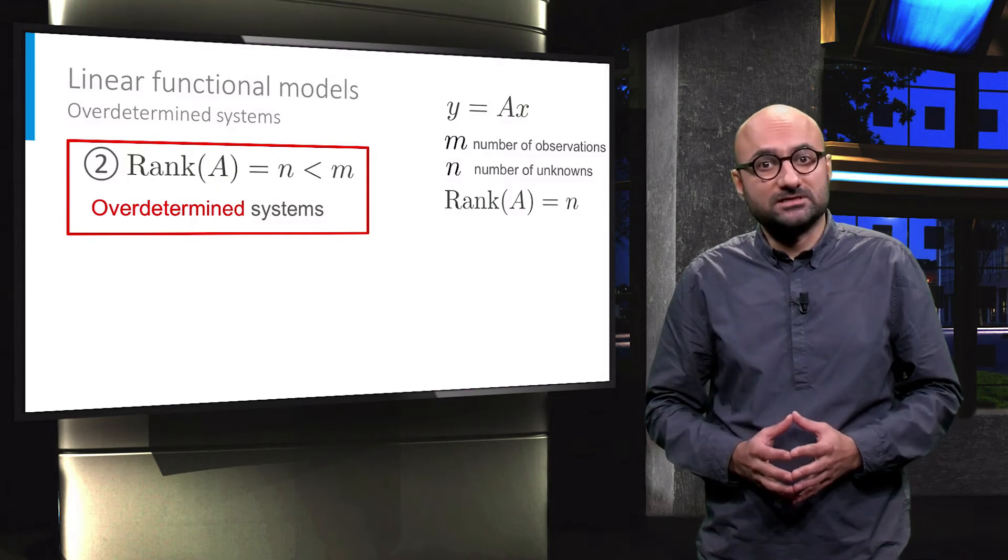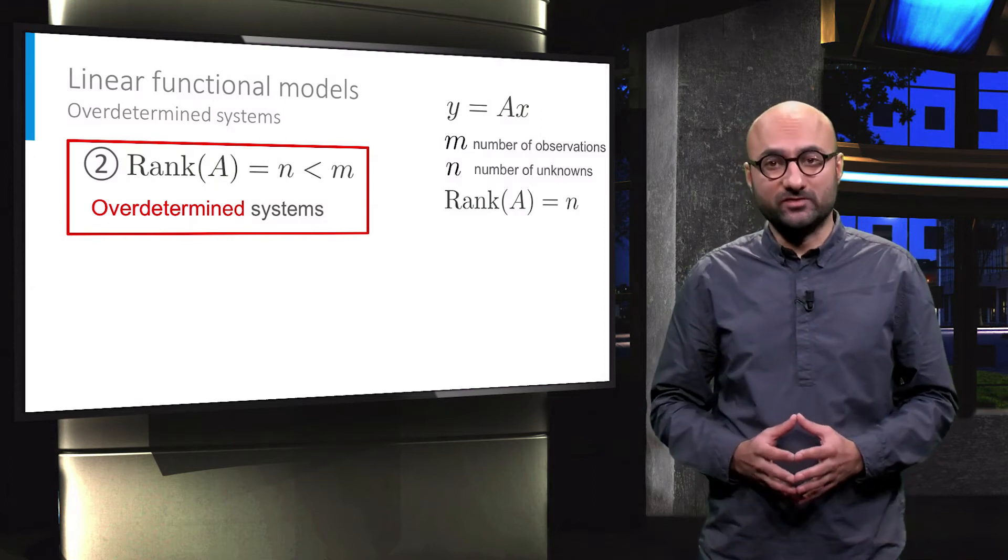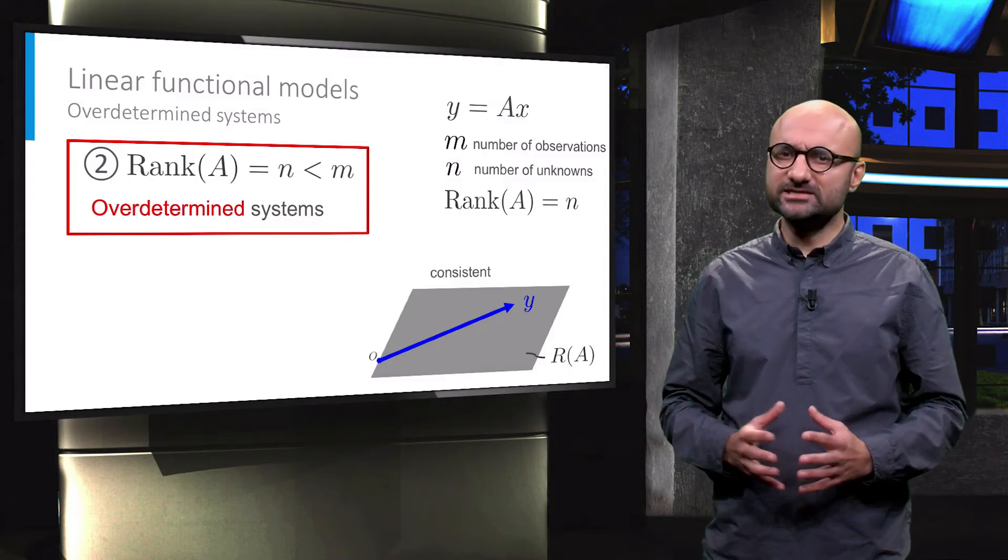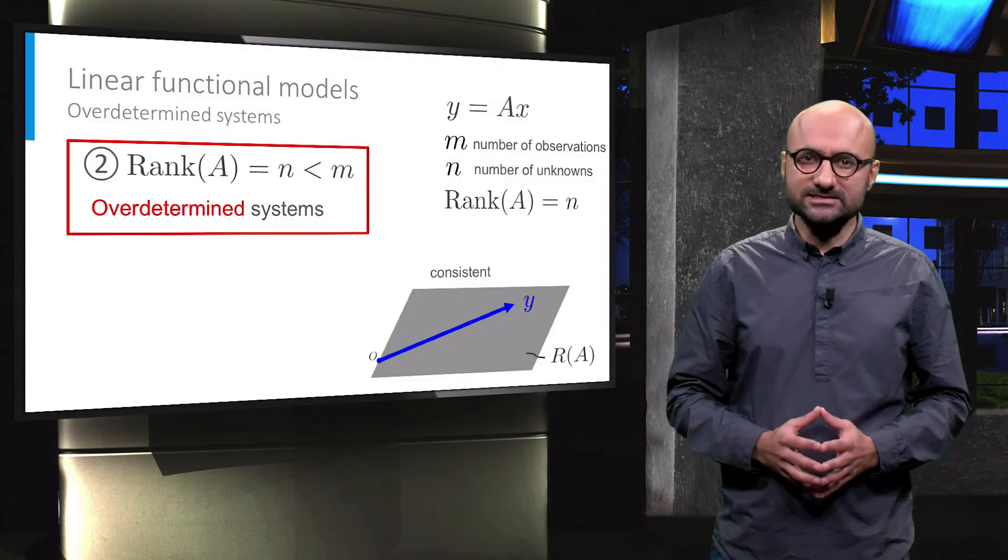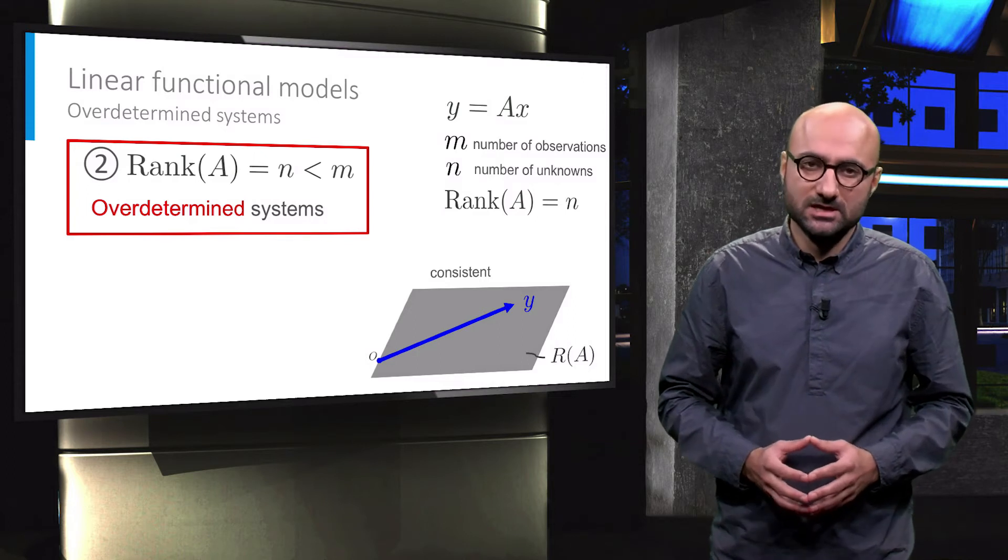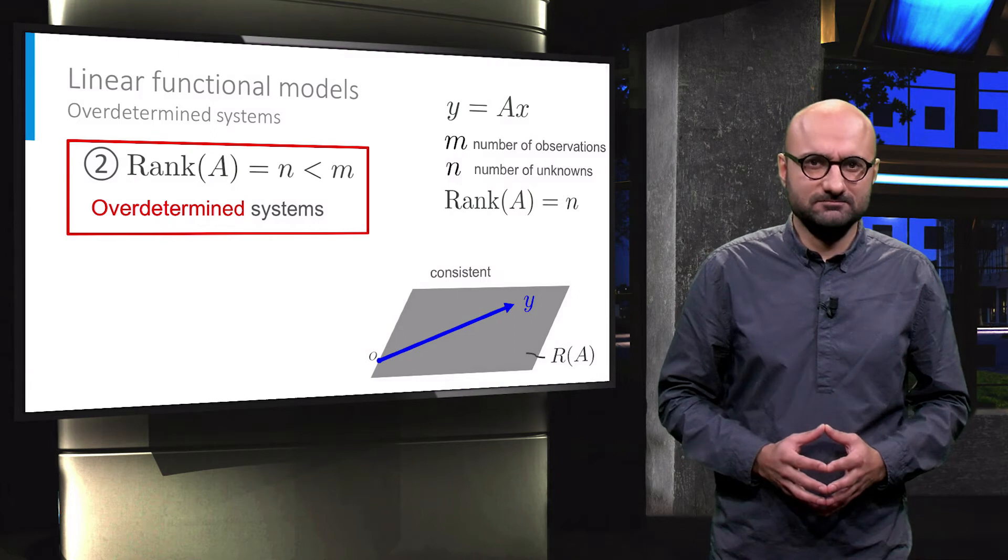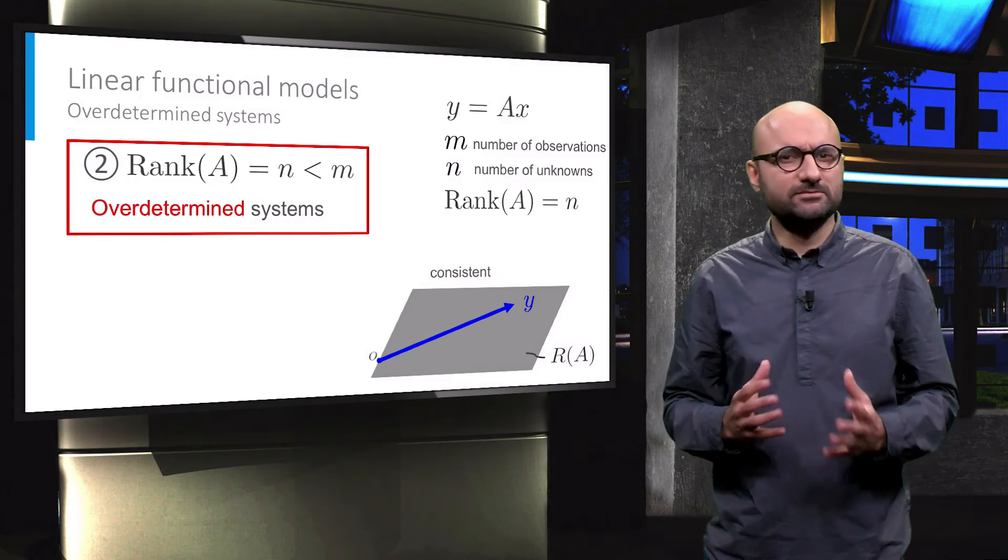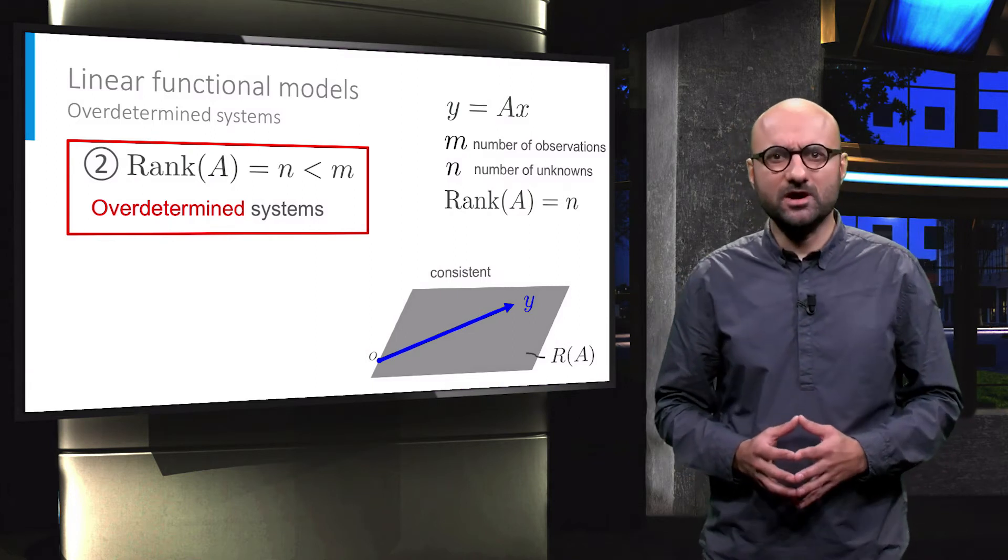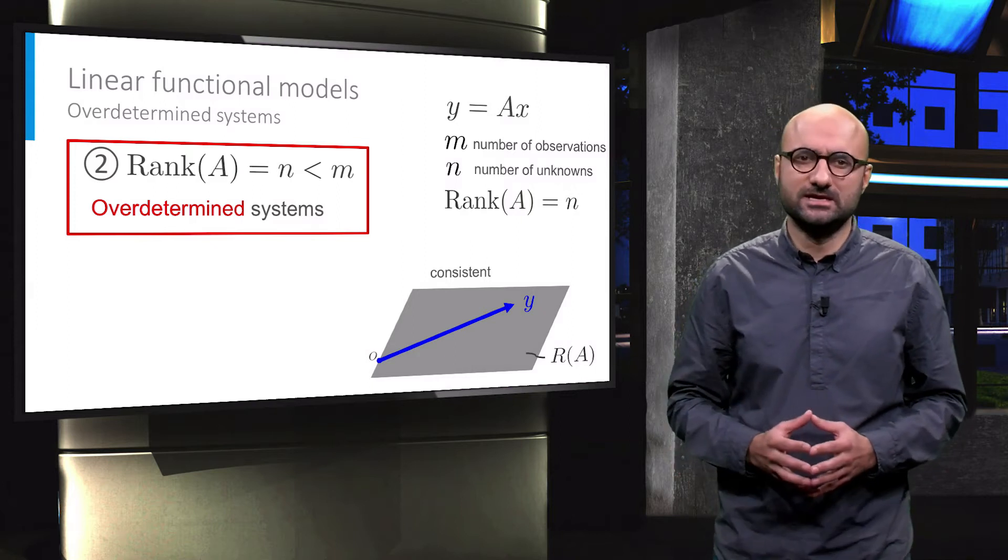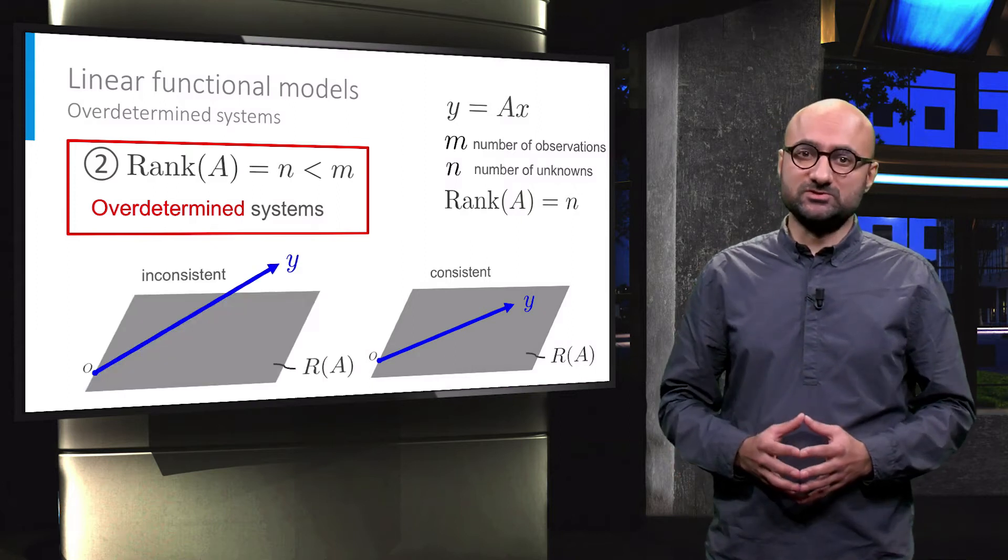Whether or not a solution exists for an over-determined system depends on the actual entries of the observation vector y. If the observation vector is in the range space of A, the system is consistent. But since in practice perfect observations do not exist and measurements are always contaminated by errors, we more often deal with inconsistent systems with no solutions.